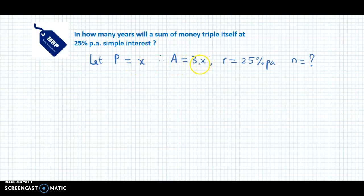We know that amount equals the principal plus the simple interest. So we have 3x = x + SI. From here we obtain the value of simple interest: 3x - x gives us 2x.